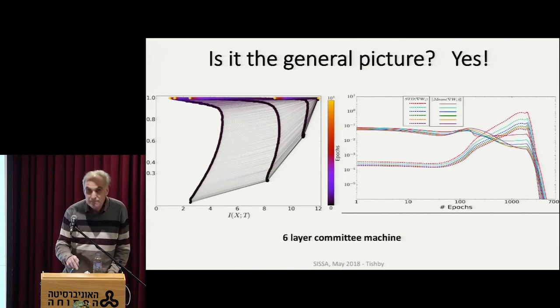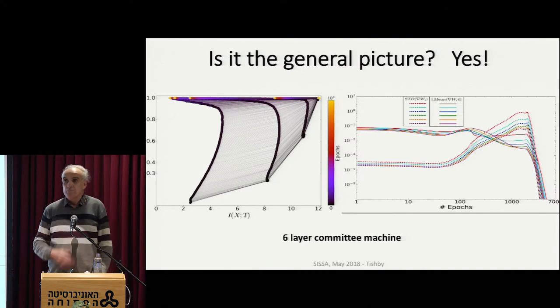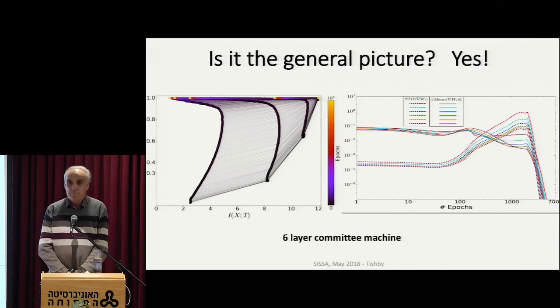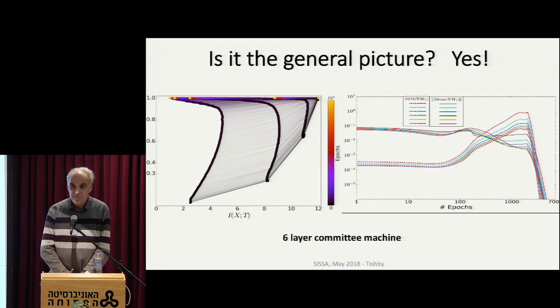I have a question. Does it imply that when you train, you should initially use a large number of epochs with very little data until you reach this line, and only later on add additional data?